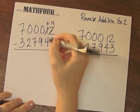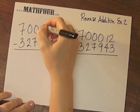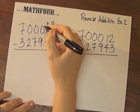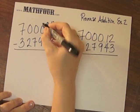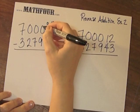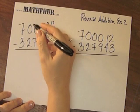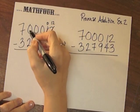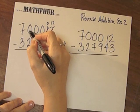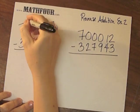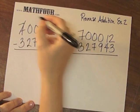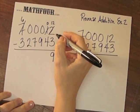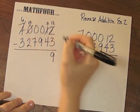0 can't subtract 4, so I have to borrow from this guy. But there's nothing to borrow, so I have to go here — but there's nothing to borrow. So I have to go here, but there's nothing to borrow, so I have to go here. So this becomes a 6, and this becomes a 10.